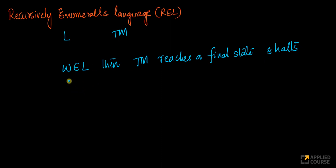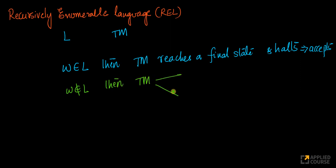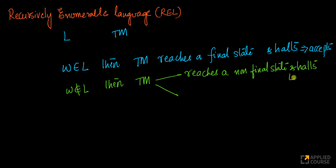Now the second case is the tricky one. If the word does not belong to the language, the Turing machine can do two things: it can reach a non-final state and halt — in which case we reject — or the Turing machine can go into an infinite loop. Both of these are possible.